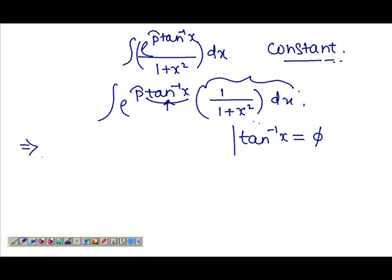And then I differentiate both sides, this time with respect to phi. So 1 over 1 plus x squared, the derivative of x with respect to phi, equals to 1, the derivative of phi with respect to phi.